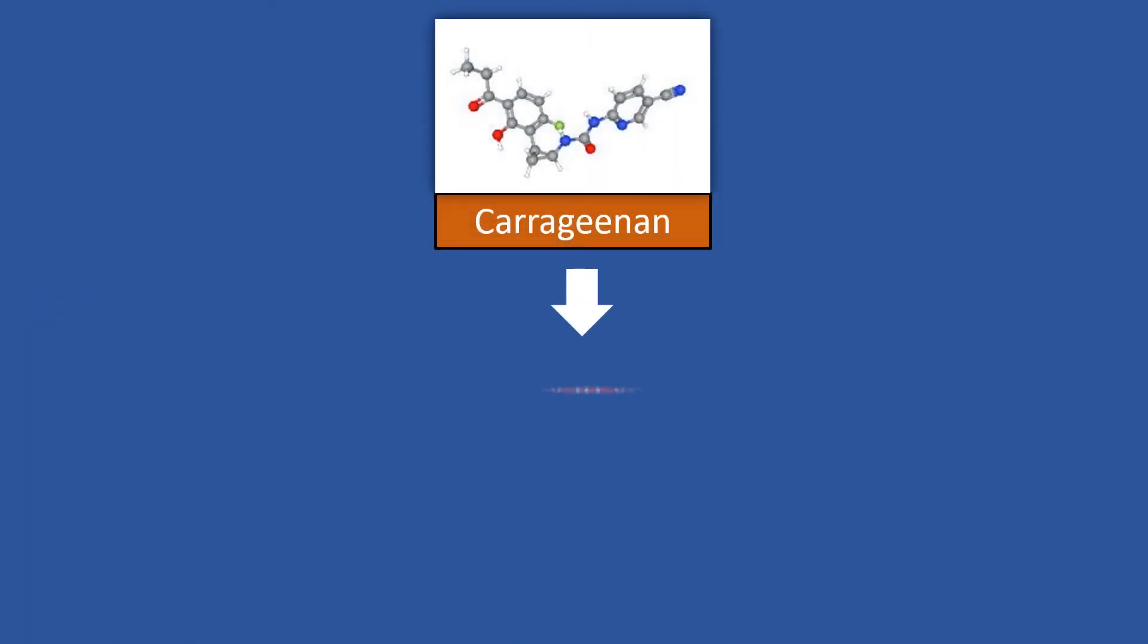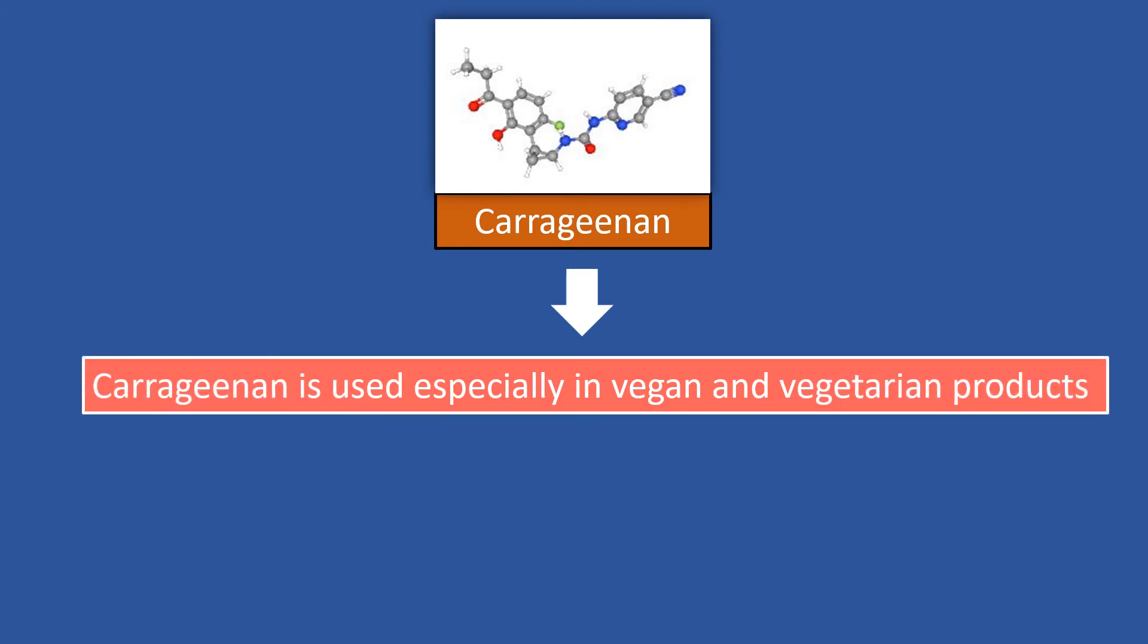It is important to consider that carrageenan is used especially in vegan and vegetarian products. This is because manufacturers add carrageenan, which is extracted from plants, to replace gelatin, which is made from animal parts.